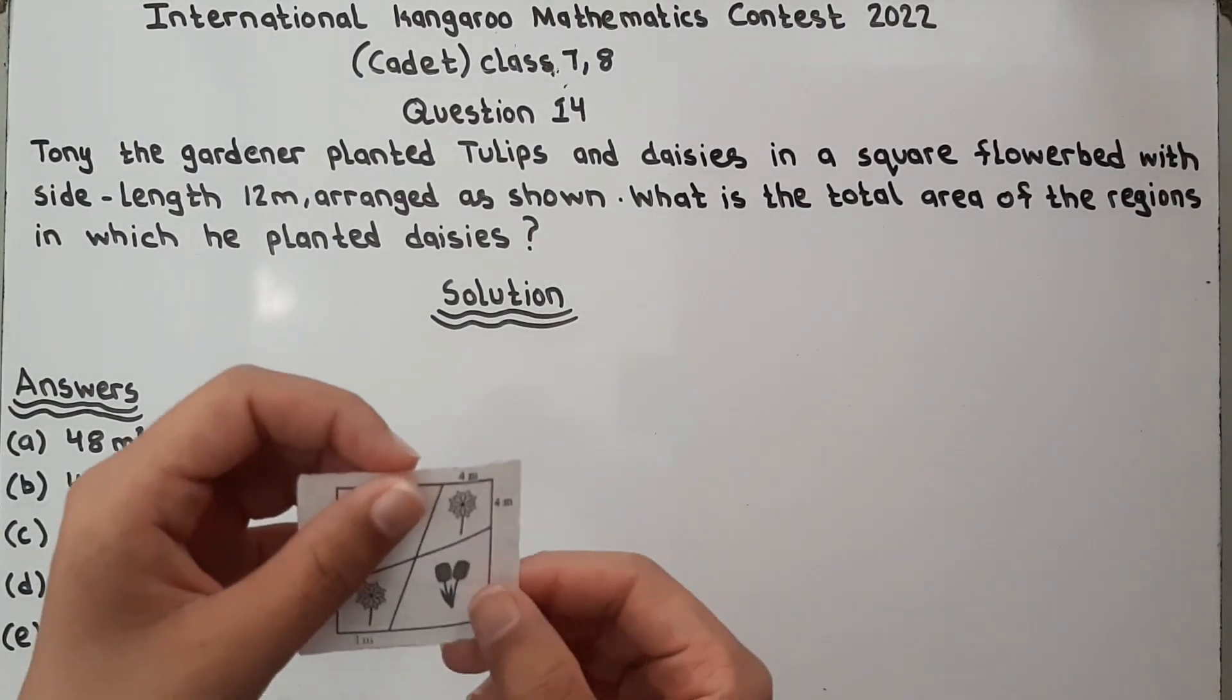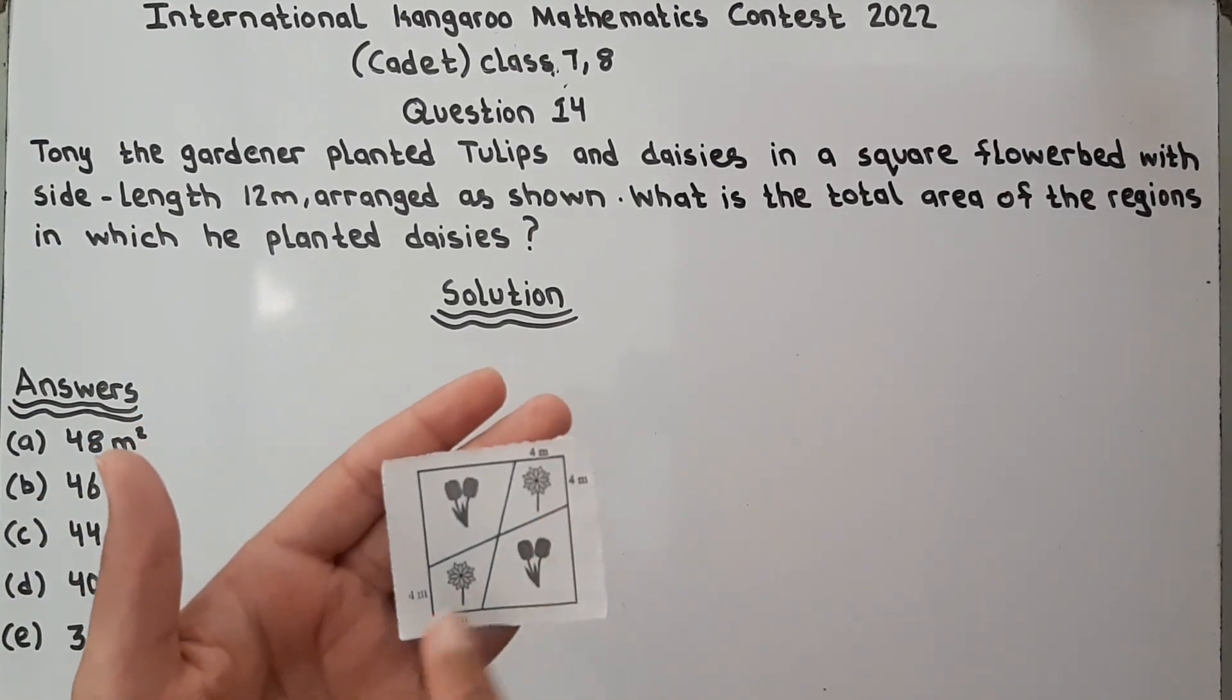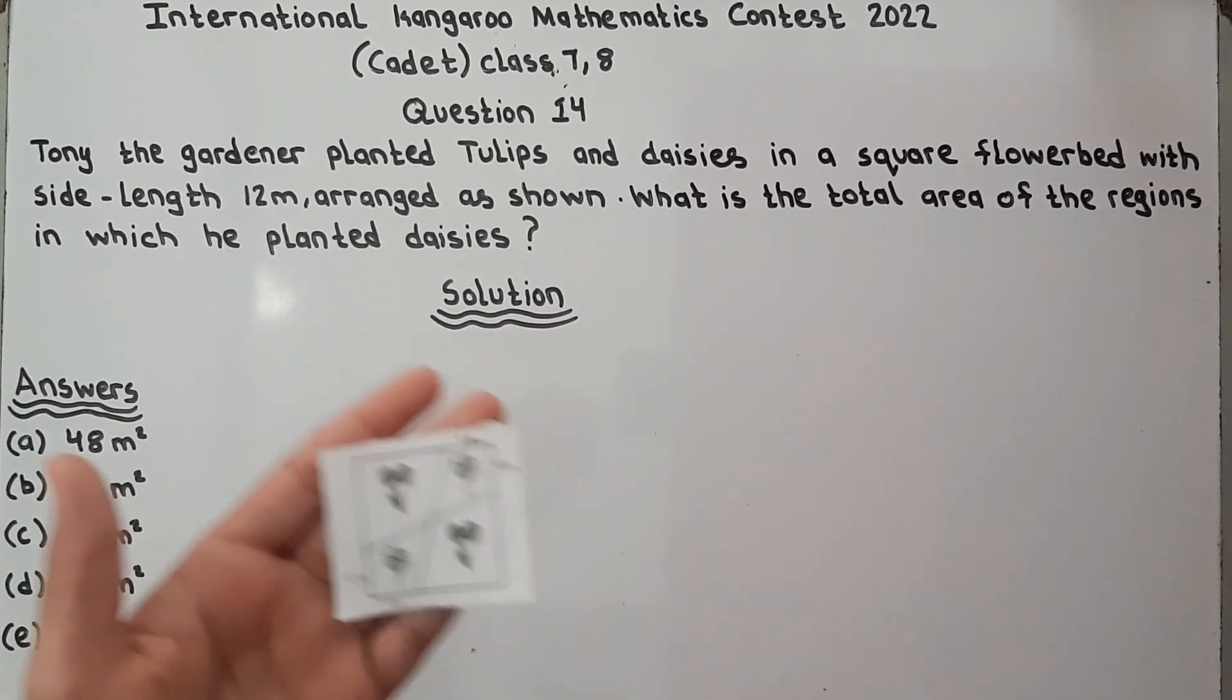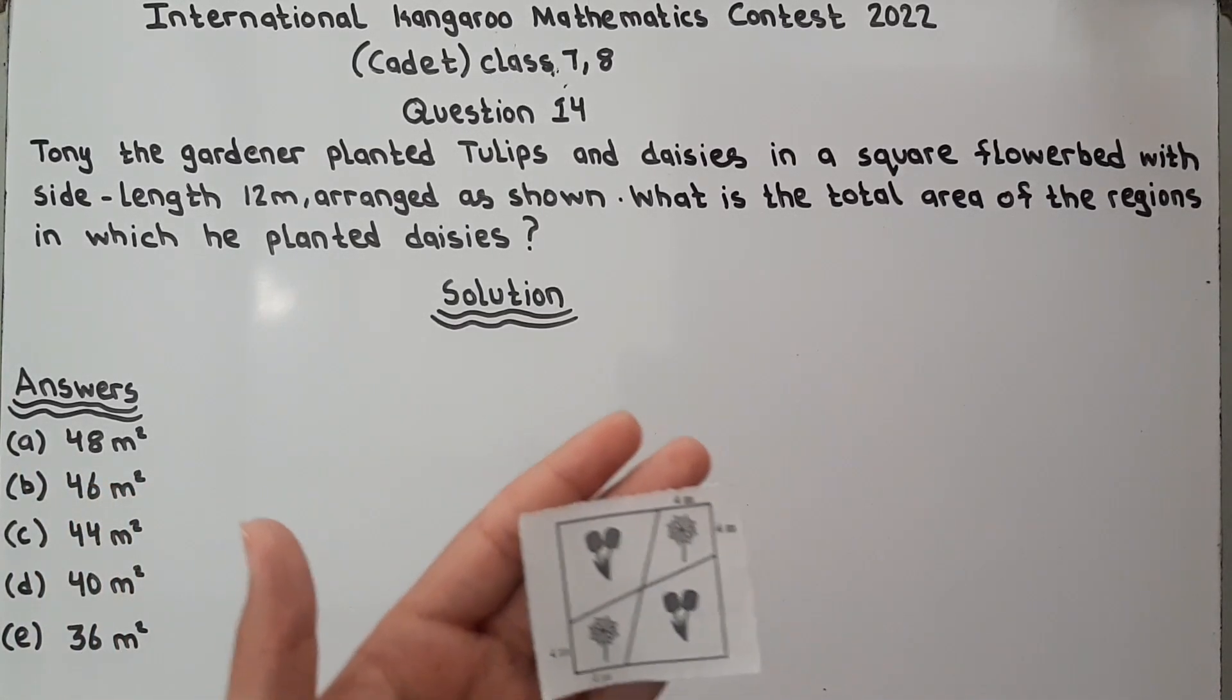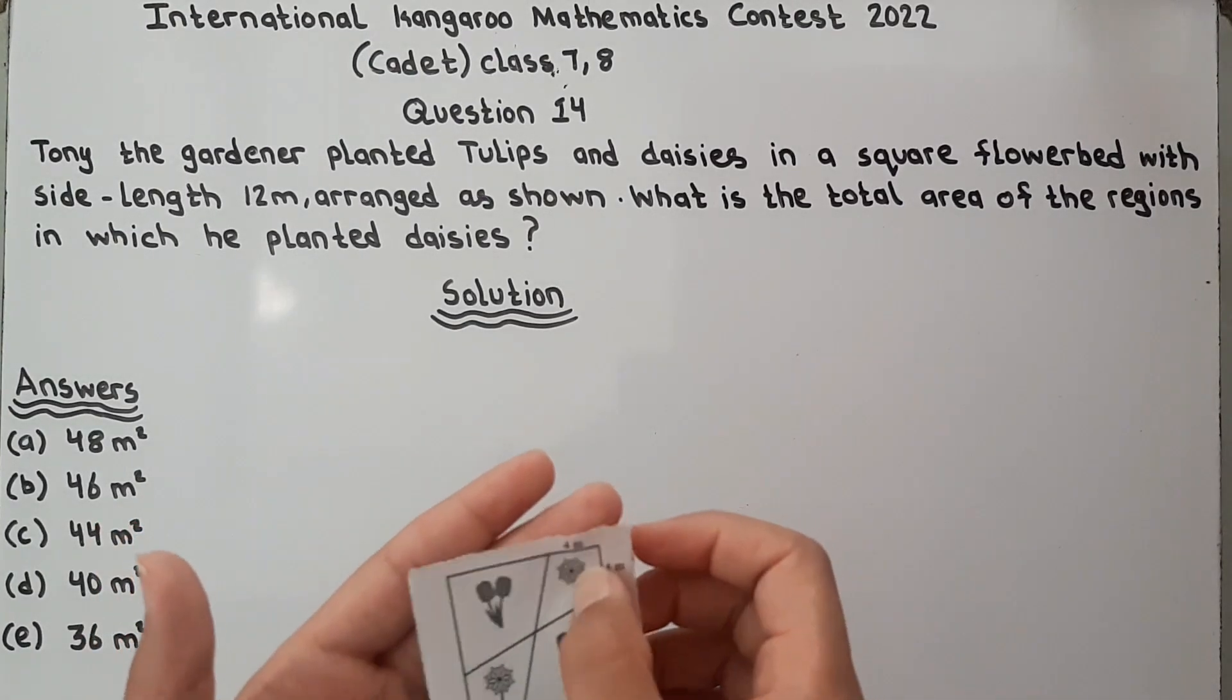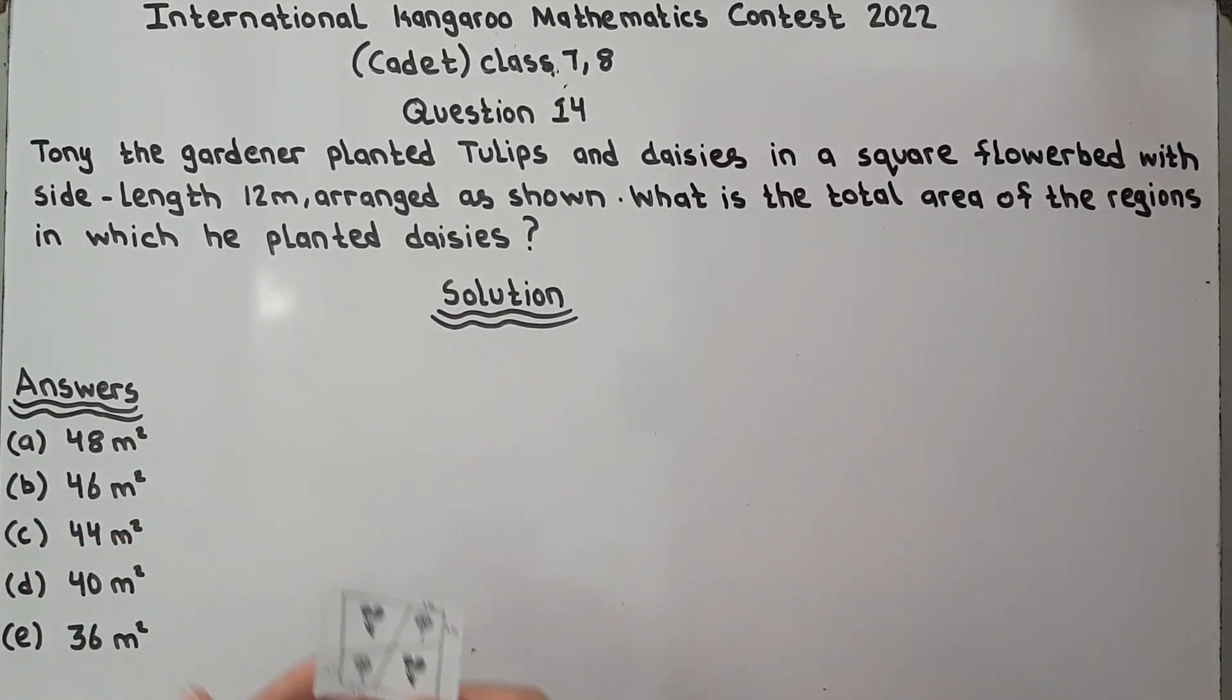These are the daisies and these are the tulips. They are asking what is the total area of the region in which he planted daisies? What is this area in which he planted daisies?